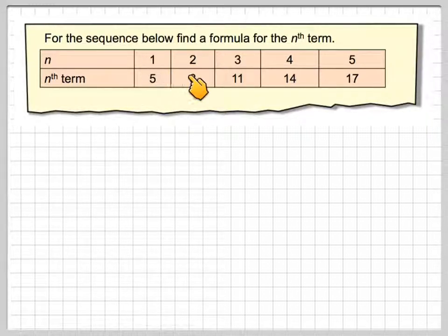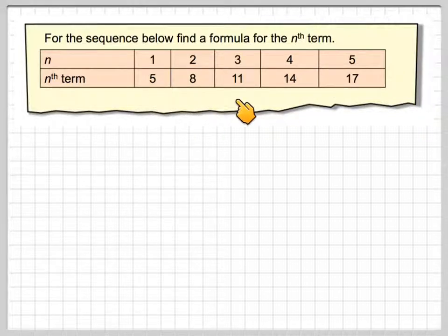So, we've got n is 1, 2, 3, 4, 5, and these are the terms of the sequence: 5, 8, 11, 14, 17.